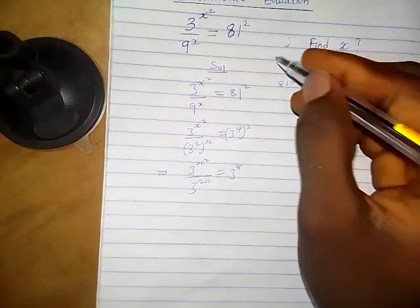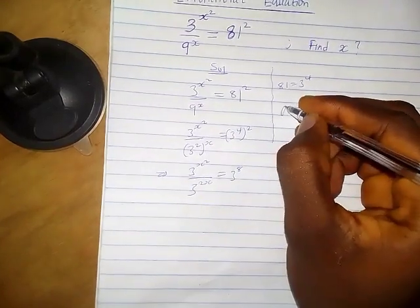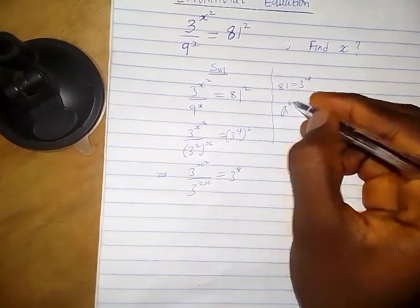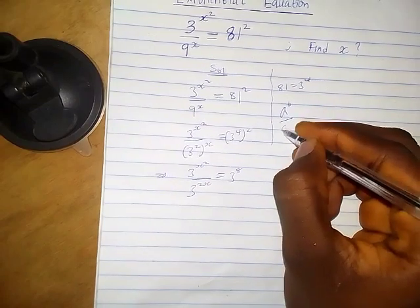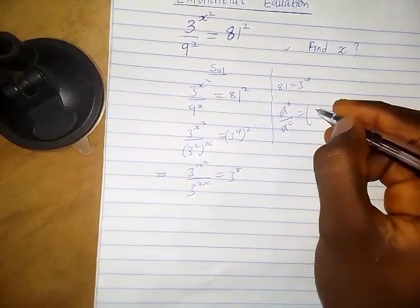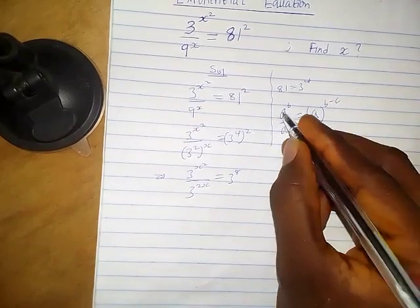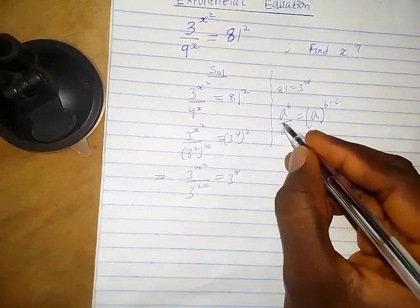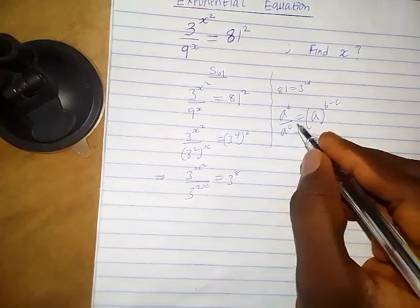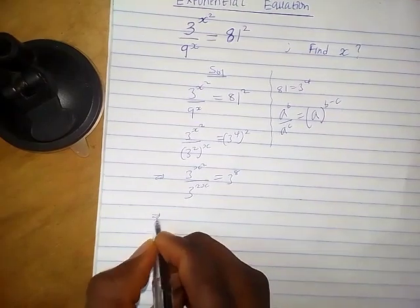Now we're going to recall a property from laws of indices. Whenever we have a raised to the power b over a raised to the power c, we can write it as a raised to the power b minus c, because the base is the same. That is the power. We're going to apply that here.